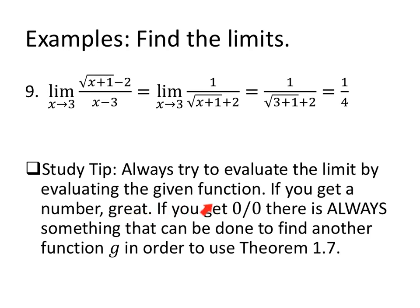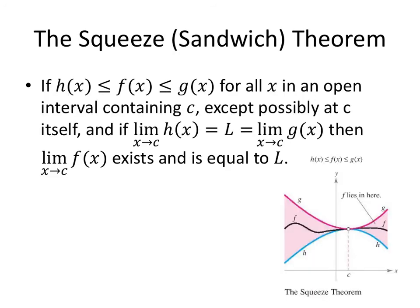Always try to evaluate the limit of the given function. If you get a number, great, move on. If you get 0 over 0, there is always something that can be done in order to find a function G in order to use theorem 1.7.